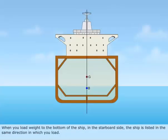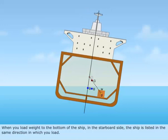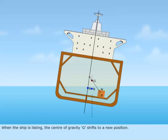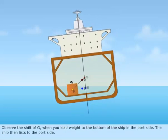When you load weight to the bottom of the ship on the starboard side, the ship lists in the same direction in which you load. When the ship is listing, the center of gravity G shifts to a new position. Observe the shift of G when you load weight to the bottom of the ship on the port side — the ship then lists to the port side.